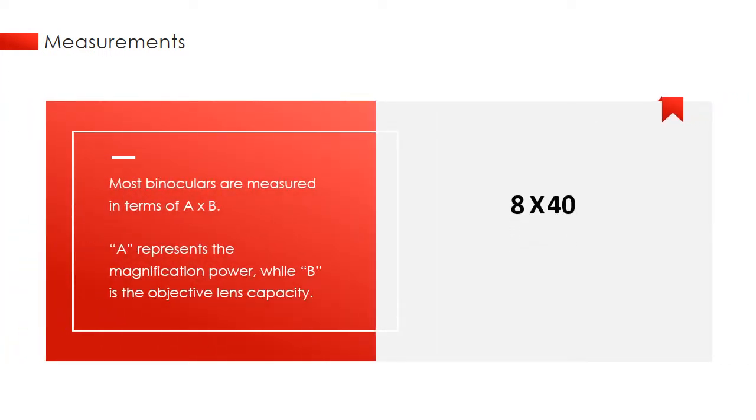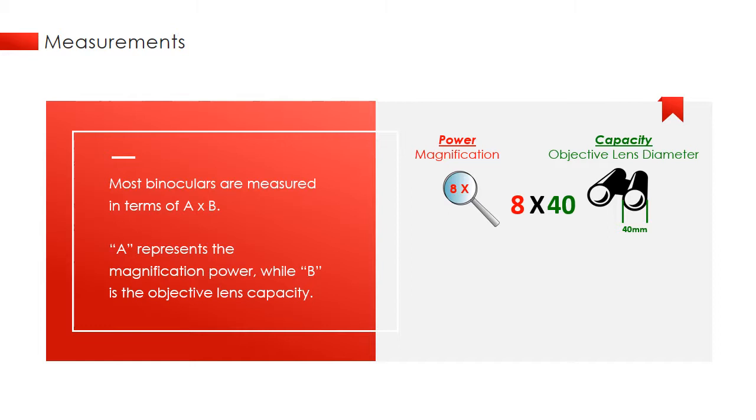For example, 8 by 40. In this example, 8 represents the magnification power of the binoculars, and 40 is the diameter of the objective lens in millimeters. The larger the diameter, the more light passed through the lens and the brighter, clearer, and sharper the picture is.